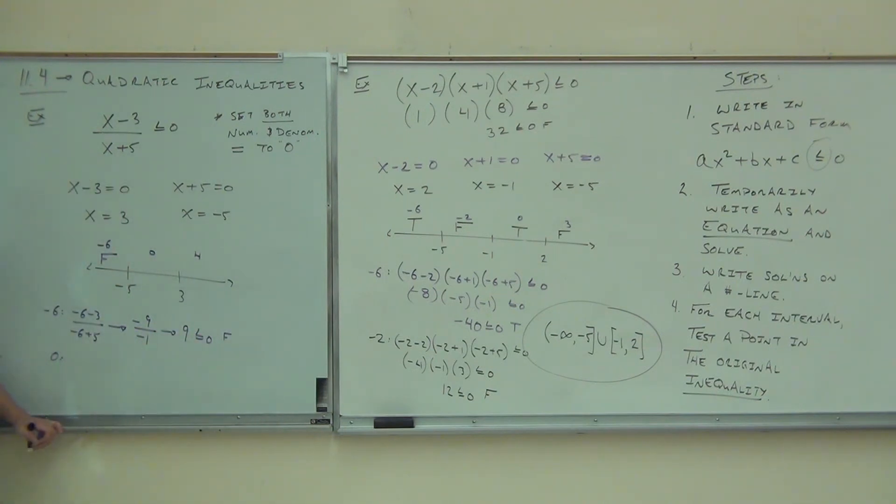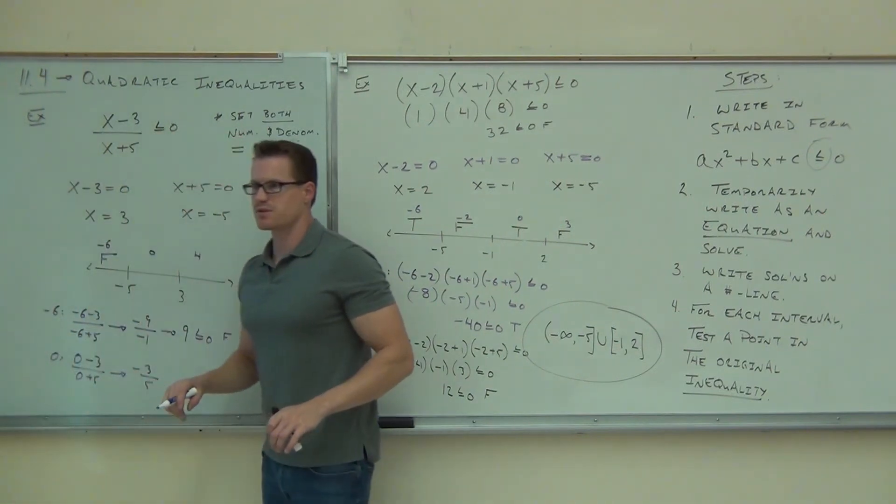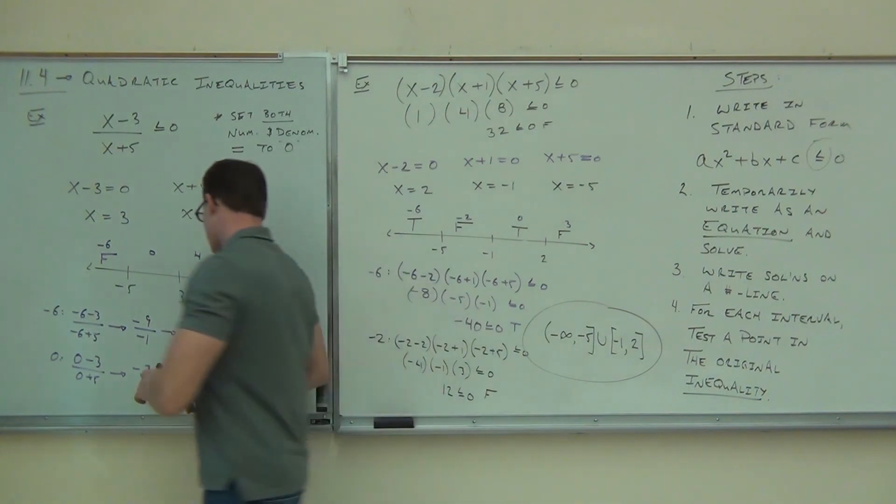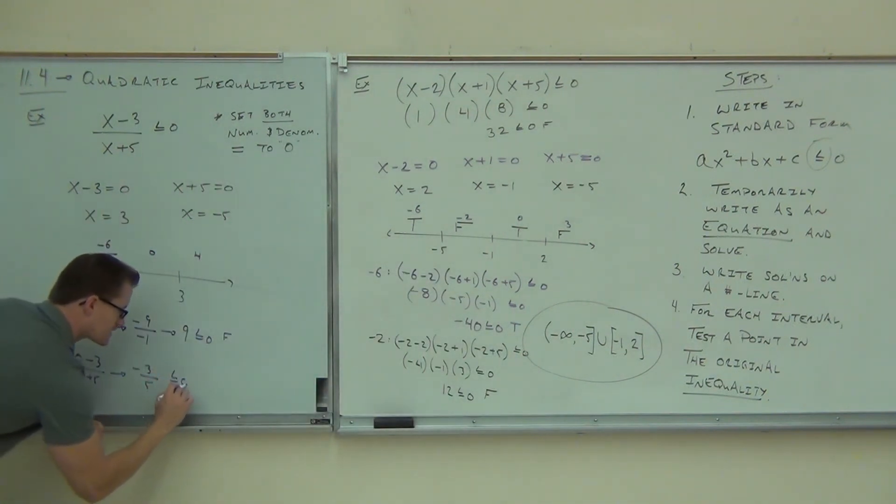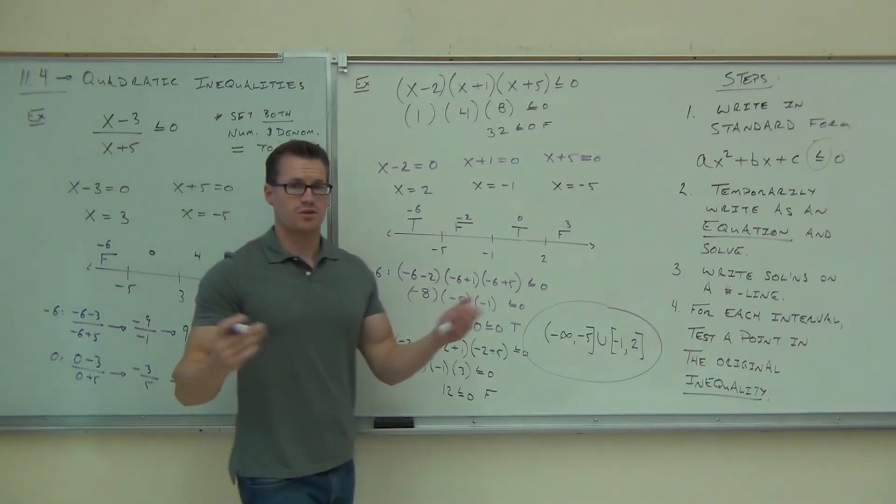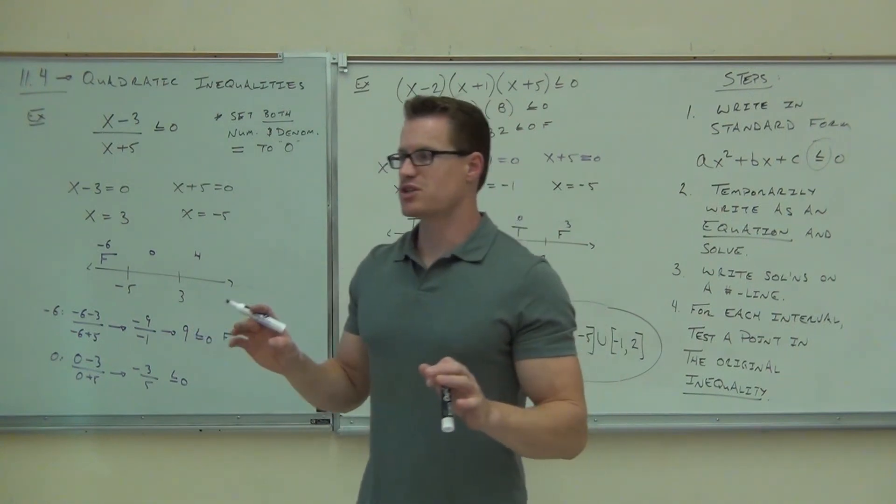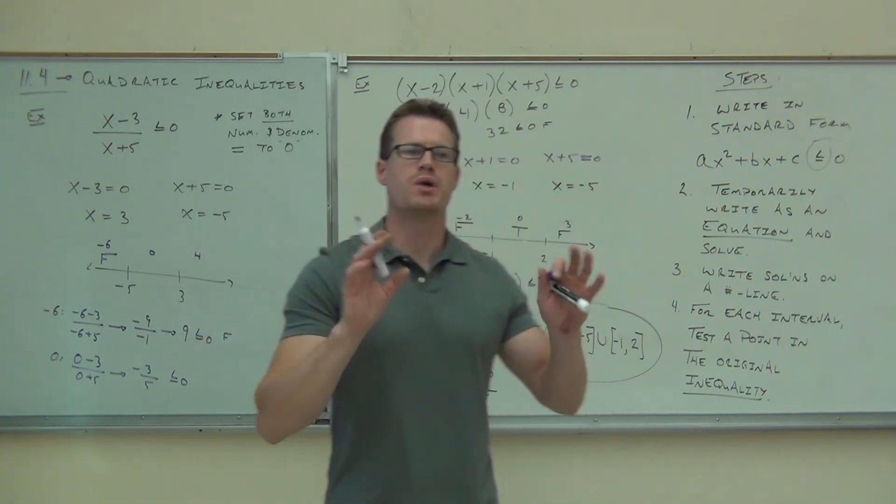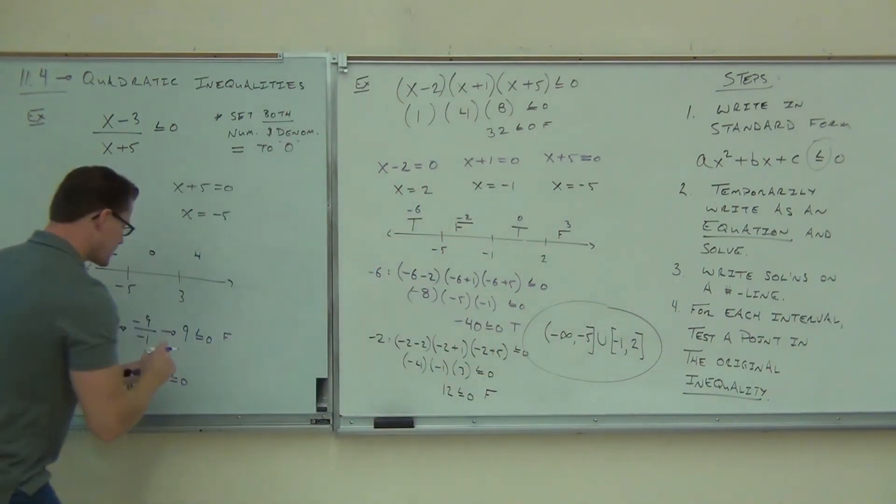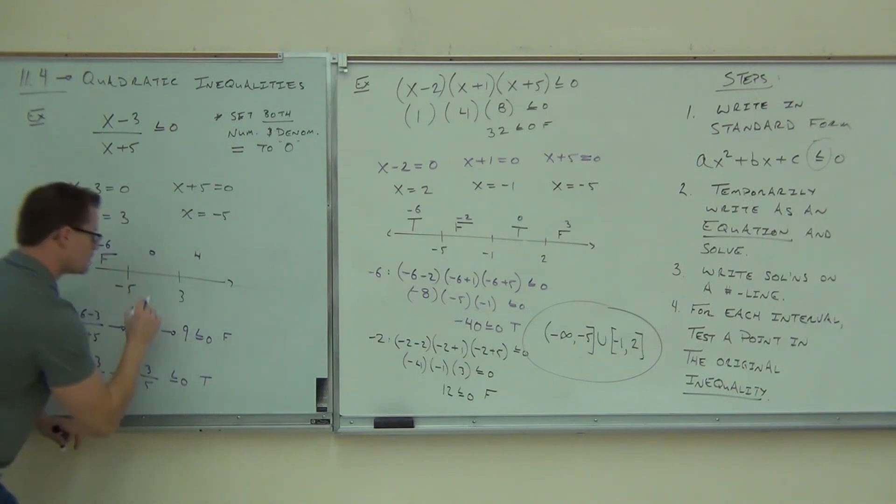How about 0? So 0 minus 3 over 0 plus 5. Notice here we're going to get negative 3 over 5. Is that a positive or a negative? Negative. So negative 3 fifths. Is that less than or equal to 0? Yes. In other words, a fraction but you really don't care what the value of the fraction is. You just care if it's positive or negative because you're comparing it to 0. So in this case, we're going to go yeah, that's true.